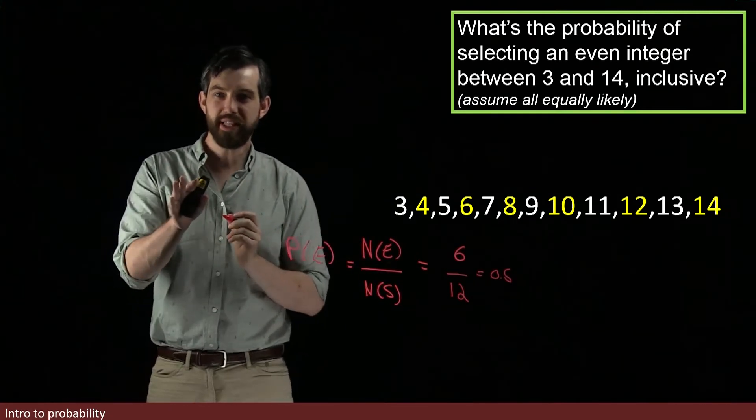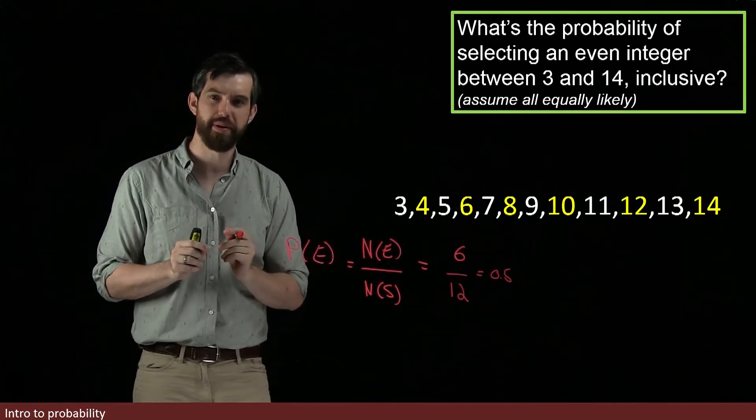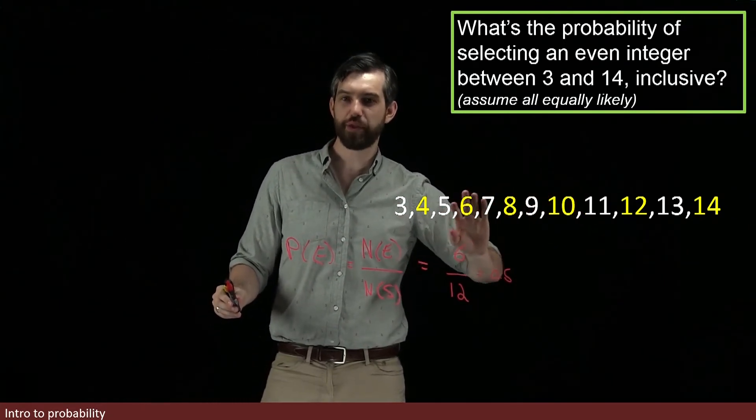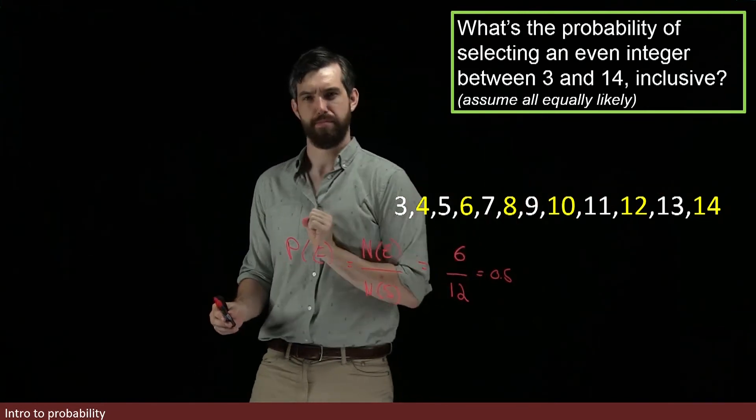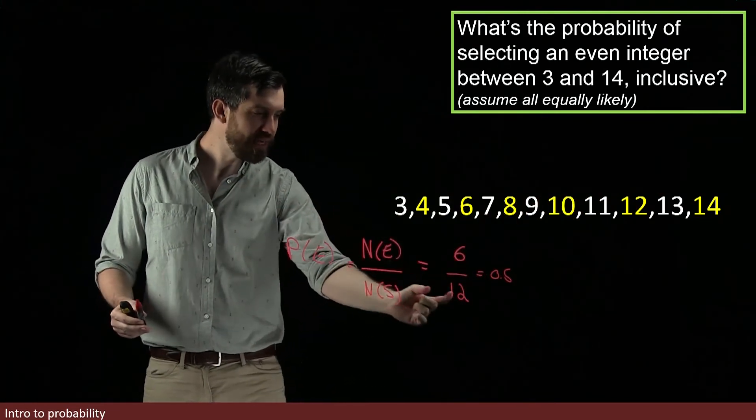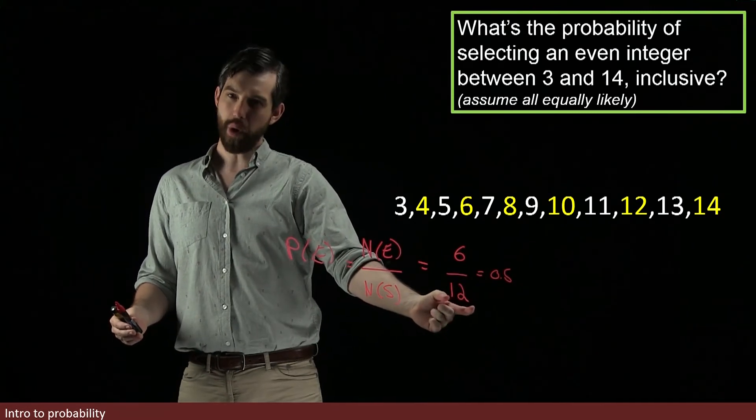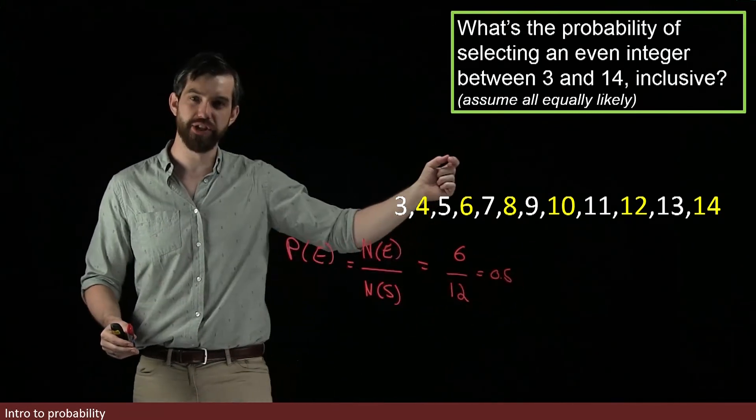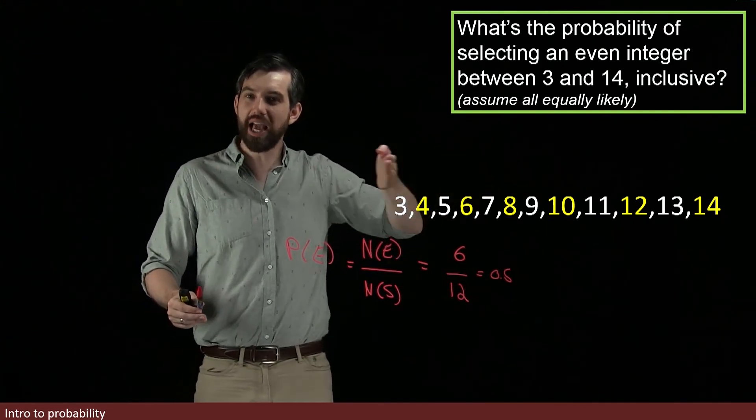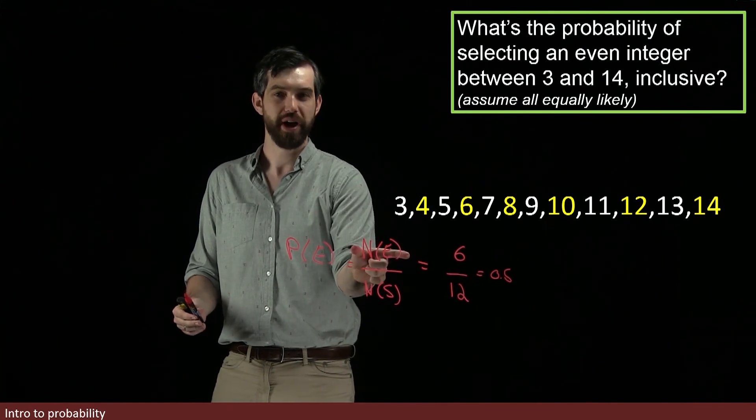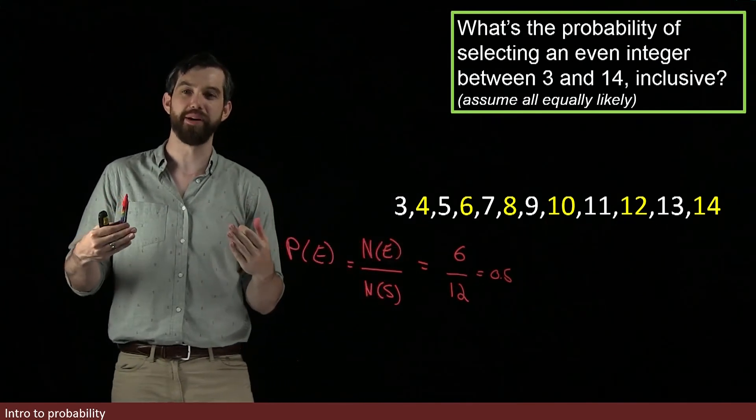But notice that if I change this question a little bit, suppose I then went and said from all the way from 3 up to 15. Well, how does that change? 15 is not an even integer, but it would increase the number down here from 12 to 13. And so your probability would change because you've increased the size of your sample space, even though you haven't changed the number of evens. You haven't changed the number in your event.